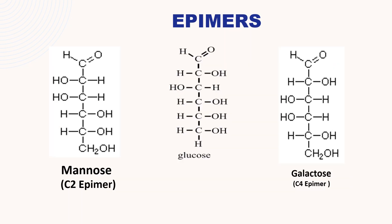Epimers. Glucose has two epimers: one is mannose and another one is galactose. The difference from glucose to mannose is at the C-2 position, there is a change. Similarly, in galactose, at the C-4 position, there is a change with respect to glucose. In the case of mannose, at the C-2 position, the H and the OH are at different sites. Similarly, in galactose, at the C-4 position, the H and the OH are in different directions. These are epimers.